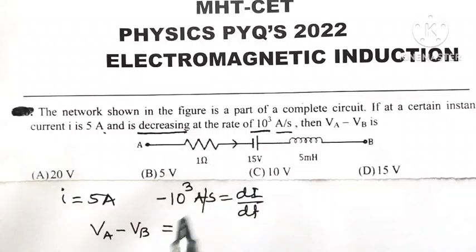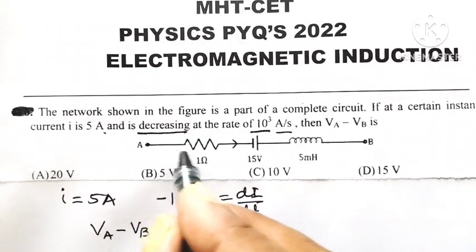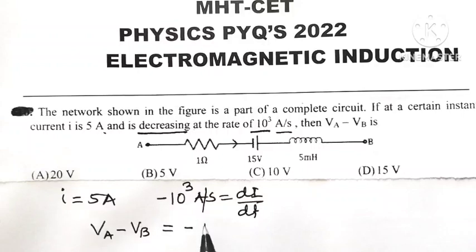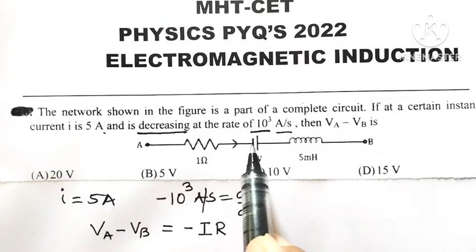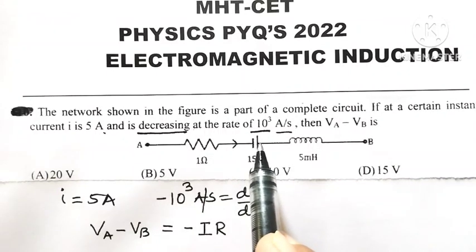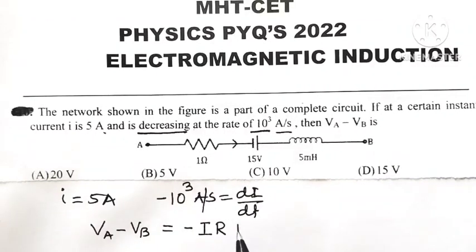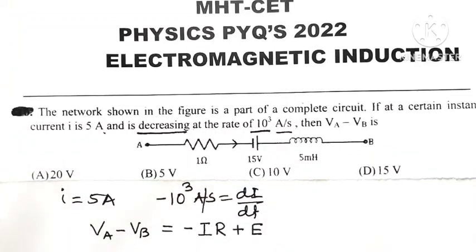current is flowing in the direction of flow of current. So that product of I into R is taken with negative sign. So minus IR. While tracing the circuit, we are moving from negative terminal towards positive terminal of battery. So EMF of that battery is taken with positive sign. So minus IR plus E.